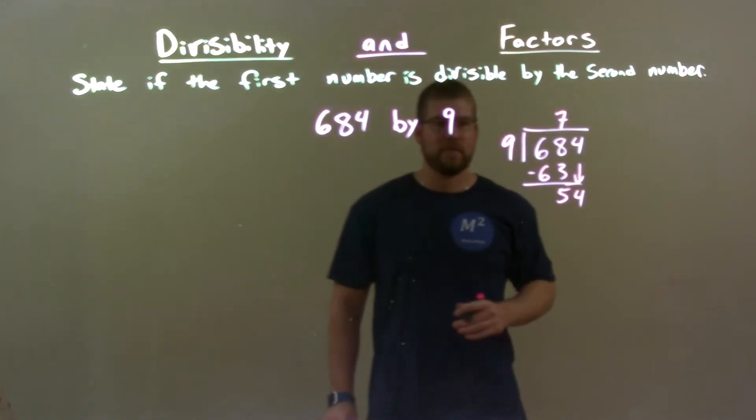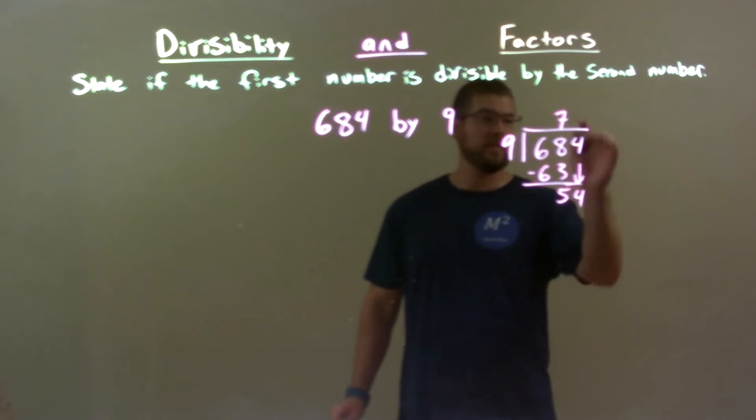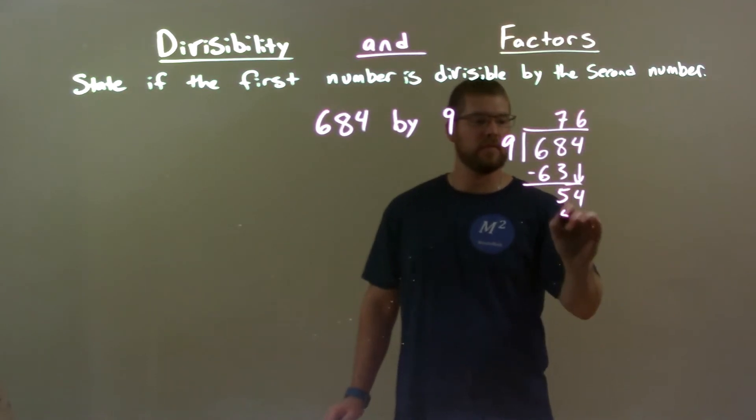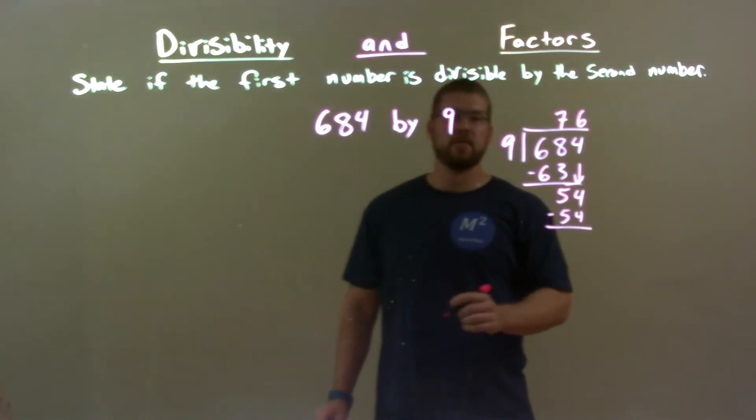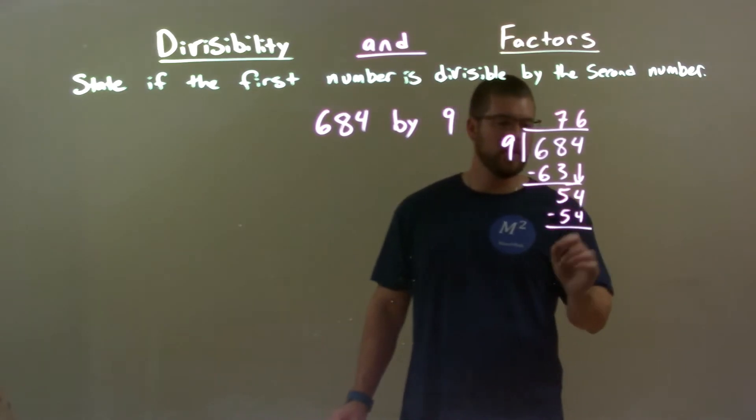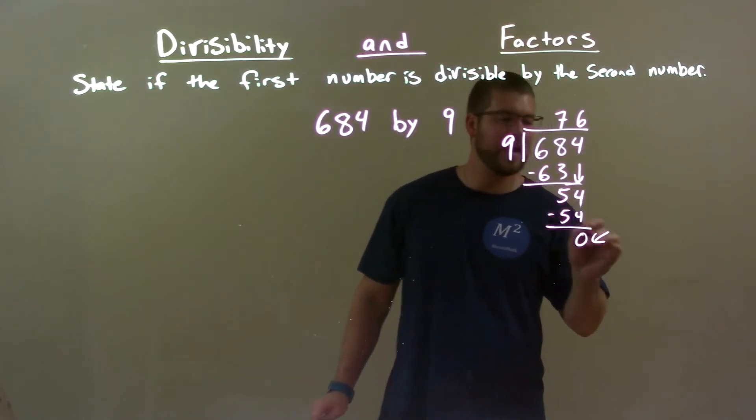Now, does 9 go into 54? Well, 9 goes into 54 six times. 6 times 9 is 54. We subtract, 54 minus 54 is 0. We got a remainder of 0.